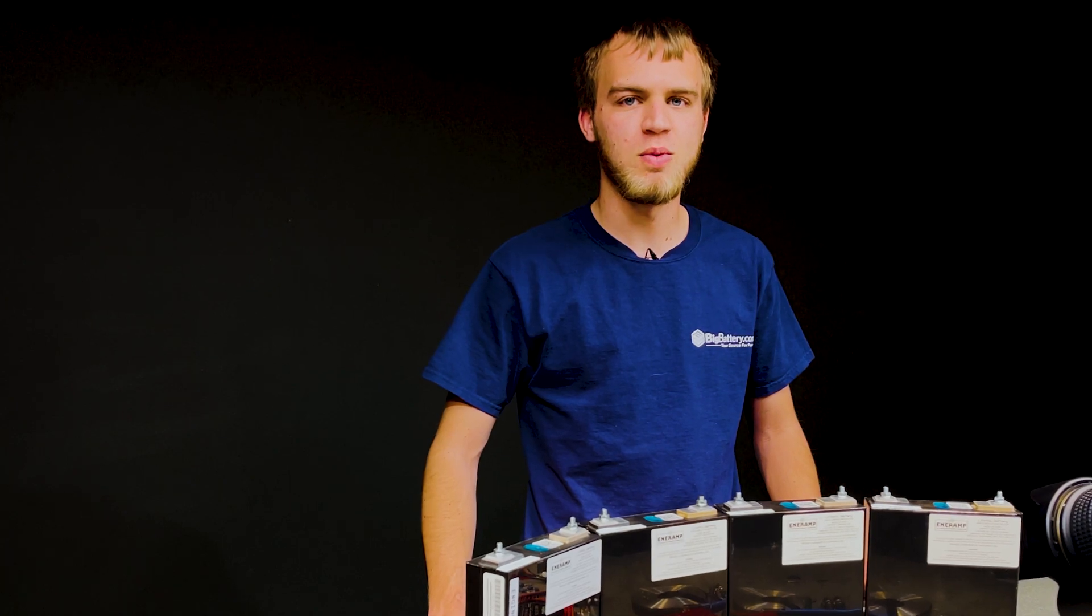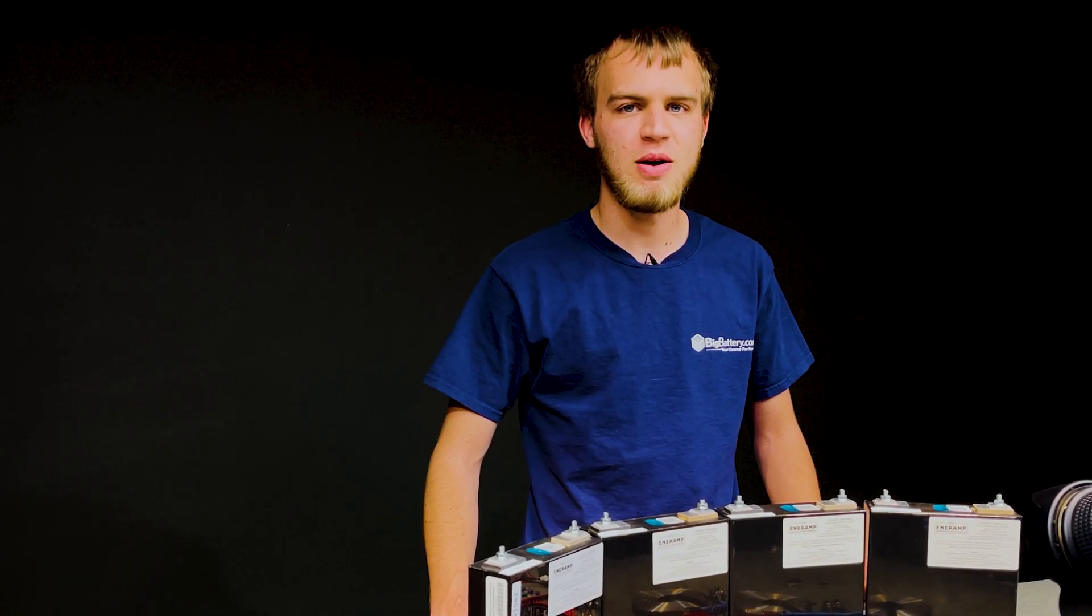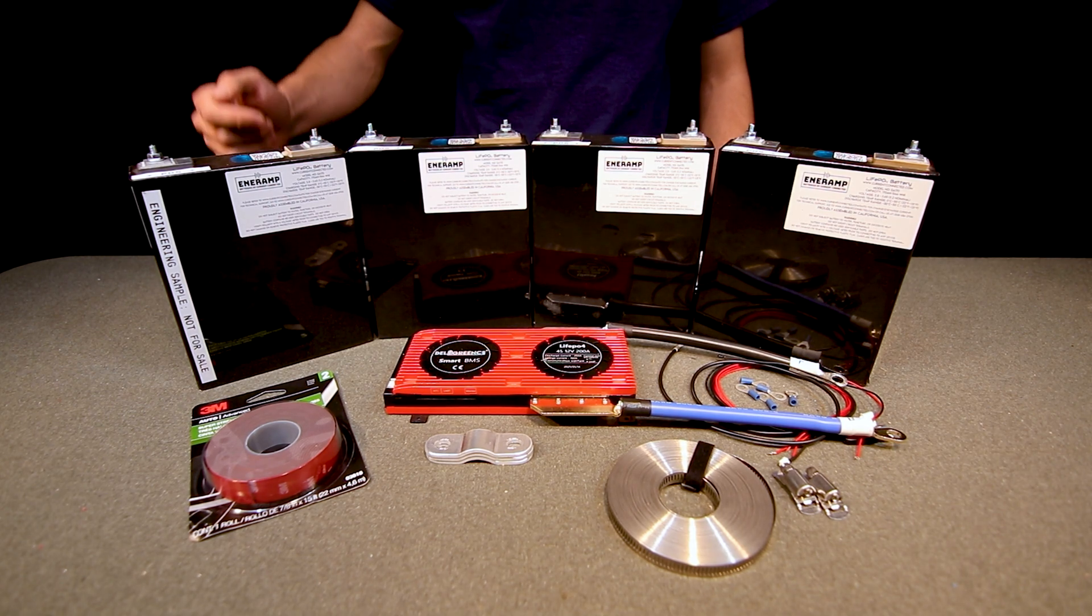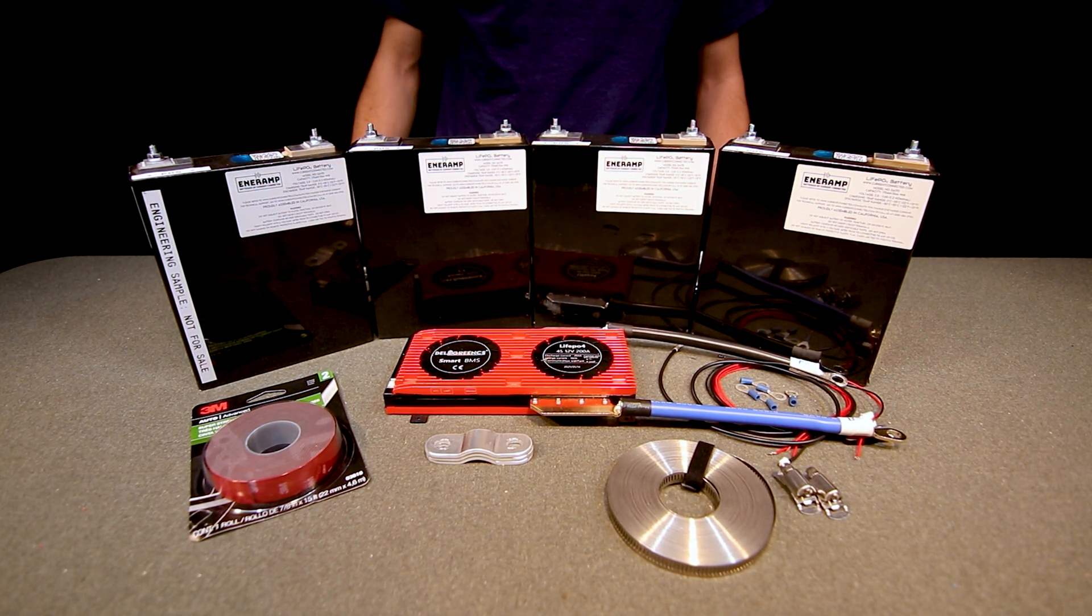Today we're going to be building a 12 volt 170 amp hour battery bank using these four EnerAmp EA170 batteries and this Deligreen 4S 12 volt 200 amp smart BMS.